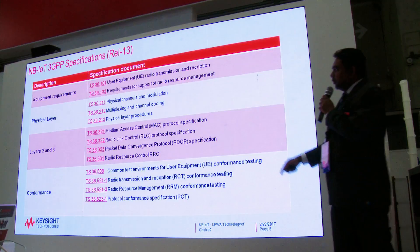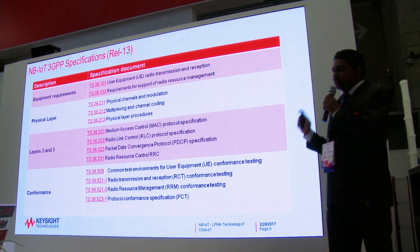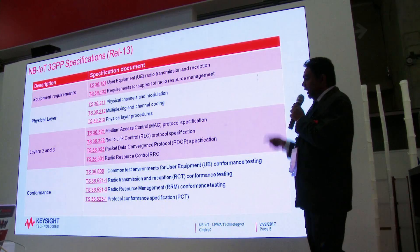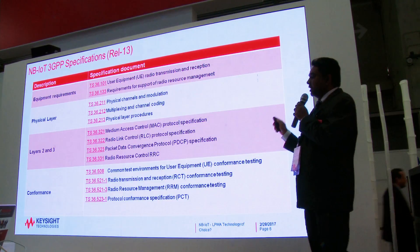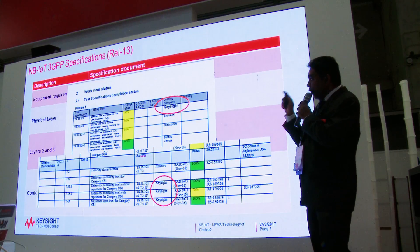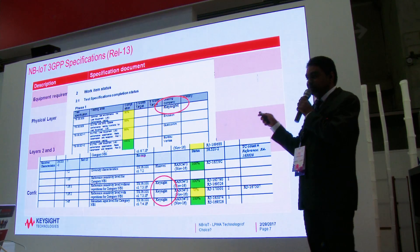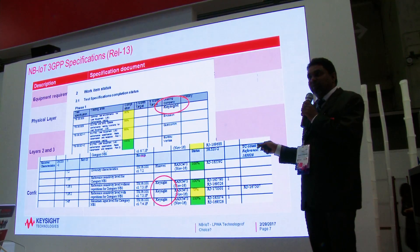The 3GPP numbering scheme for LTE and NB-IoT is identical, which explains the significant leverage that NB-IoT takes from LTE and is one reason the standard could be accelerated — developed in record-breaking time. Keysight contributed immensely in the development of the standard, owning the core specification 36.508 and contributing to a number of RF and RRM test cases.